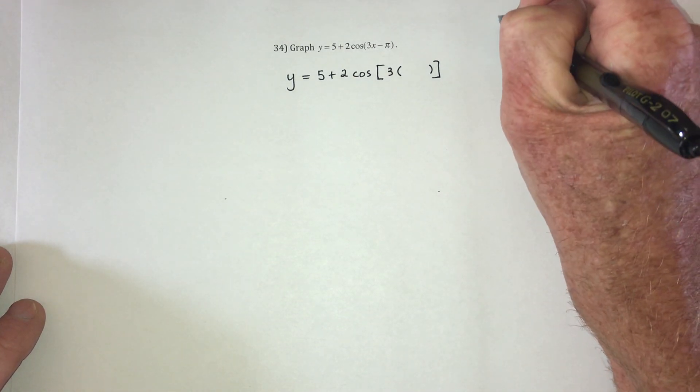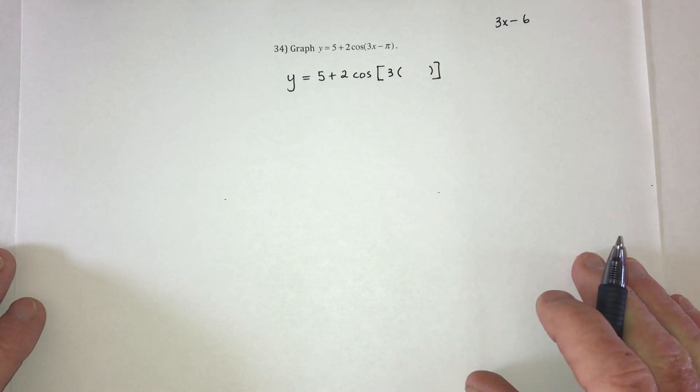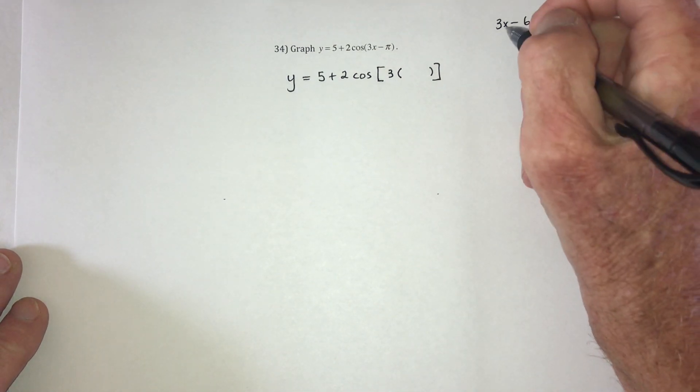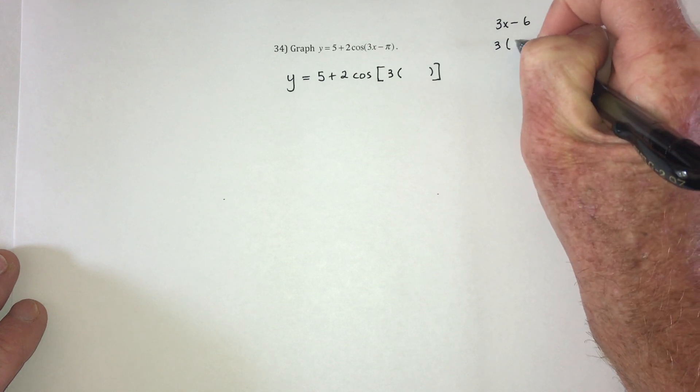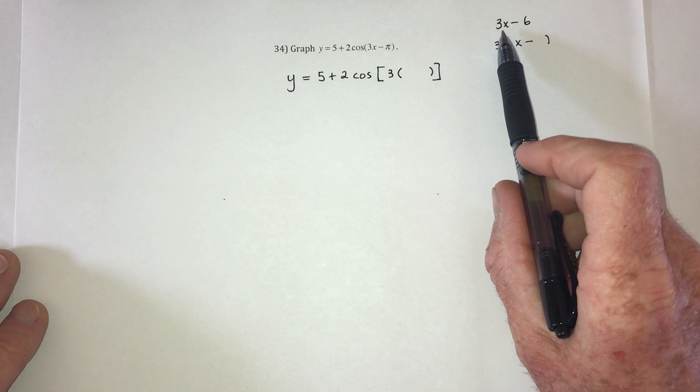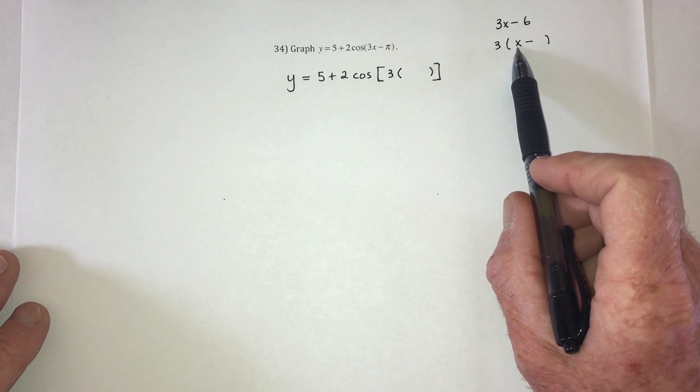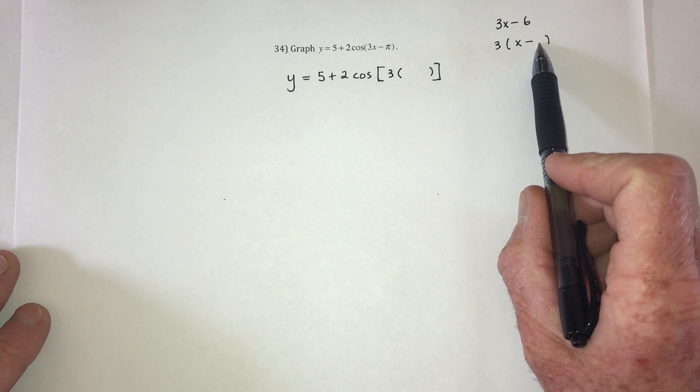And what does it leave? Well, if you had something like 3x minus 6, we're talking algebra 1 right now, and then you factor out a 3. So when you factor out a 3, this 3 gets brought out in front, so that means this is just x. Then what number goes right here?